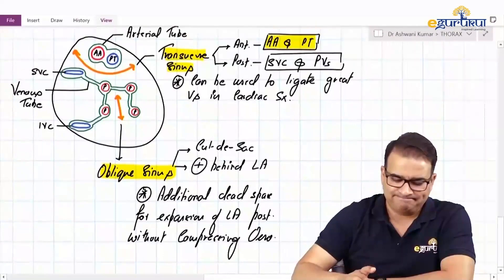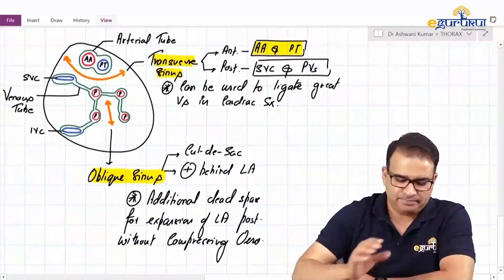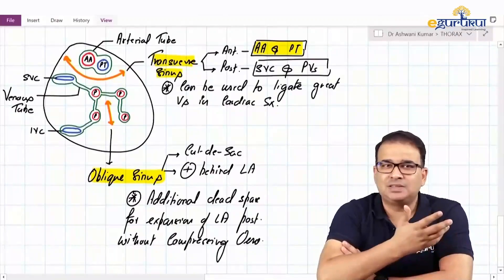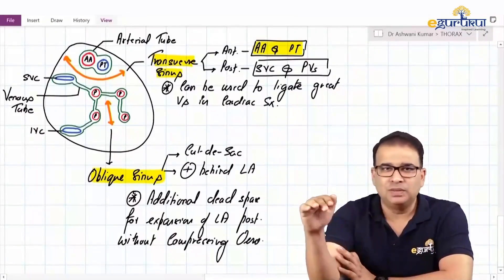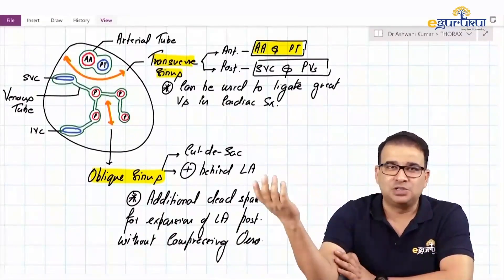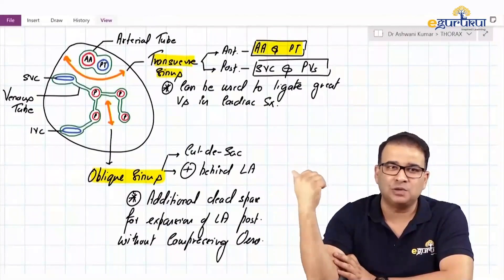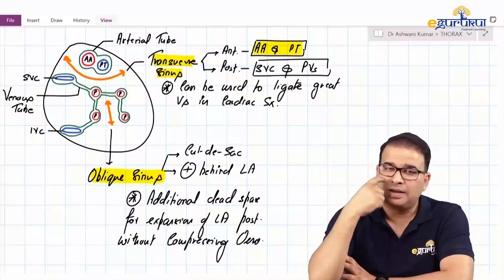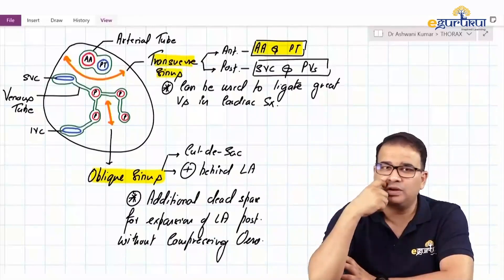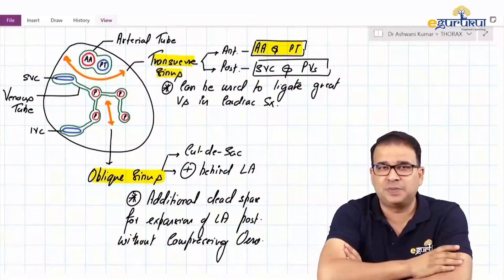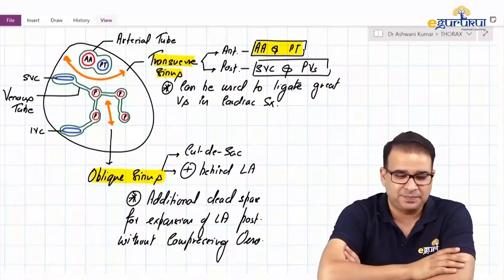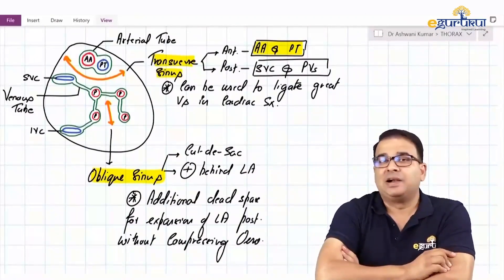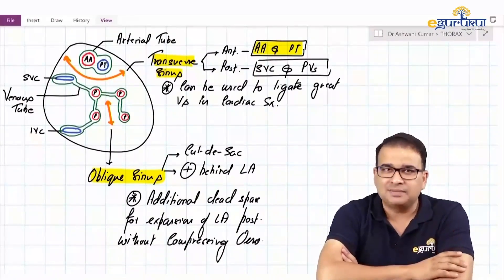This is about the pericardium and pericardial sinuses. The two sinuses: the transverse sinus, which is through and holds surgical importance, and the oblique sinus, present behind the left atrium with the natural advantage of providing additional space for the left atrium to expand. In the next part, we will talk about the heart.